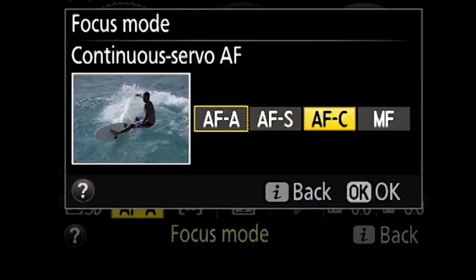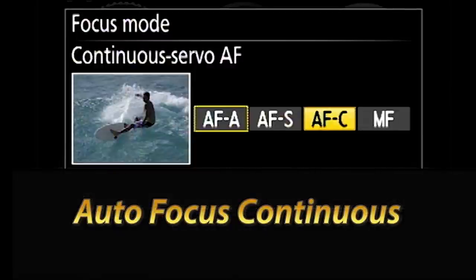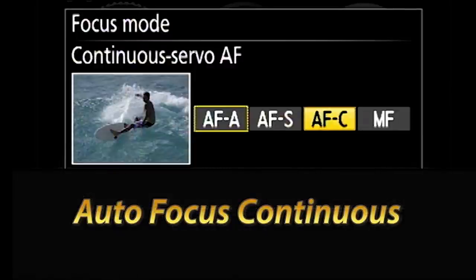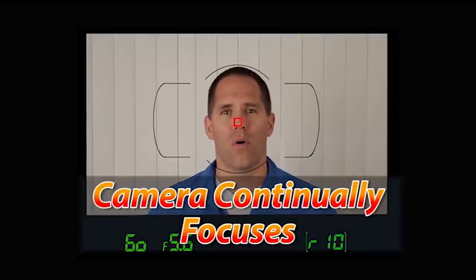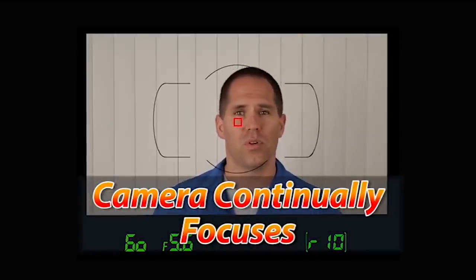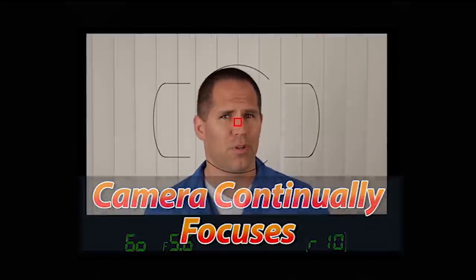Now there's another mode that we can see in this menu called AFC which stands for autofocus continuous. What this means is that when you push the shutter button halfway down and you hold it halfway down, the camera is going to refocus over and over again if your subject moves or if you move or the camera moves.